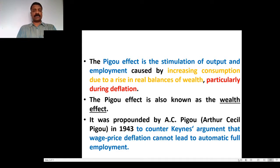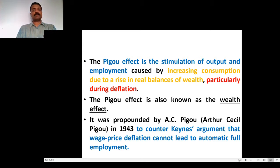In 1943, Arthur Pigou presented his argument countering Keynes. Keynes argued that wage-price deflation cannot lead to automatic full employment. Pigou countered that in a deflation period, there is a stimulation in output and in the employment level.